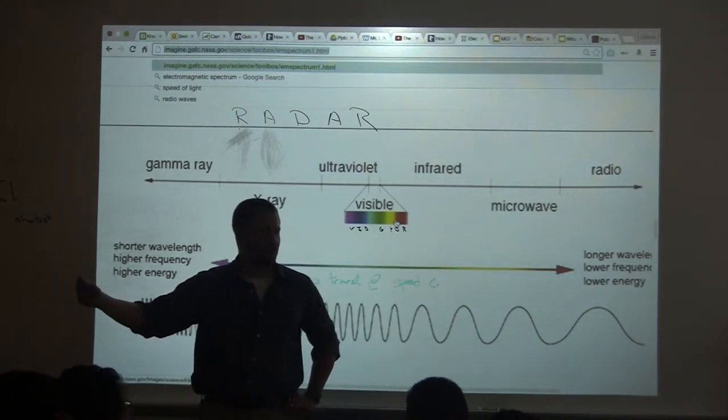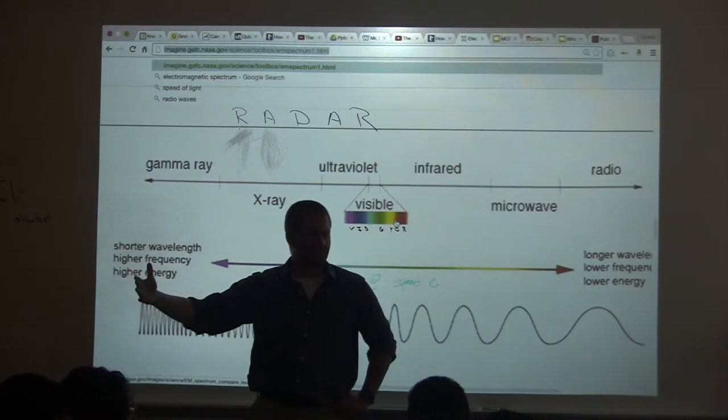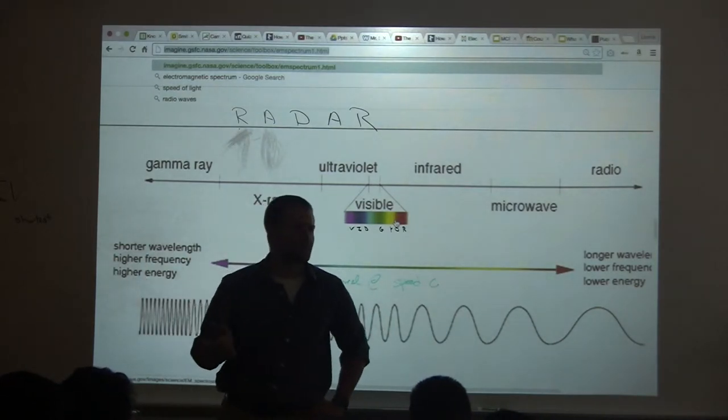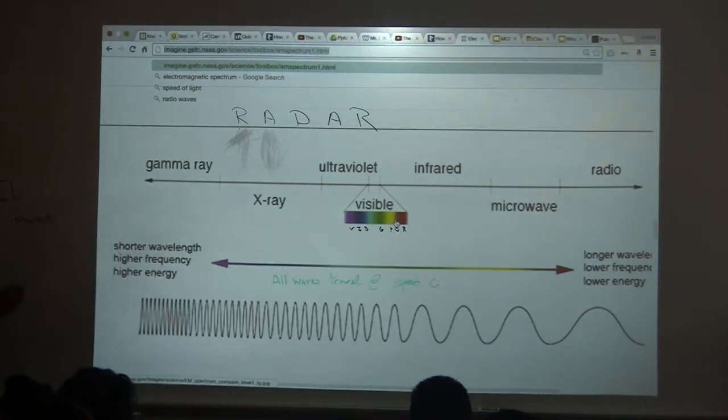They thought they found something at CERN that went faster than light, but they couldn't repeat it. They thought they had a particle that went faster than the speed of light, but they couldn't repeat the results. So shenanigans. Everybody good with that?